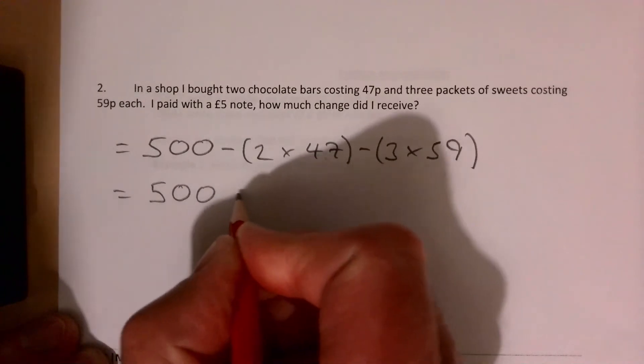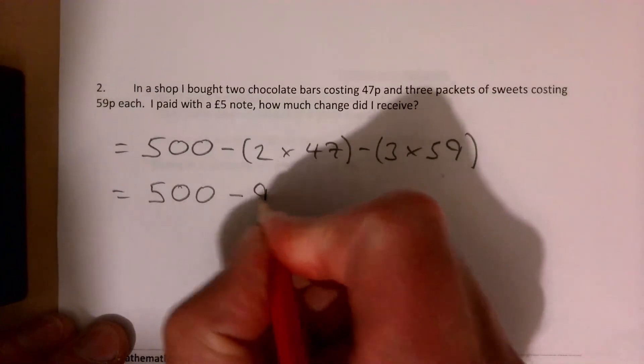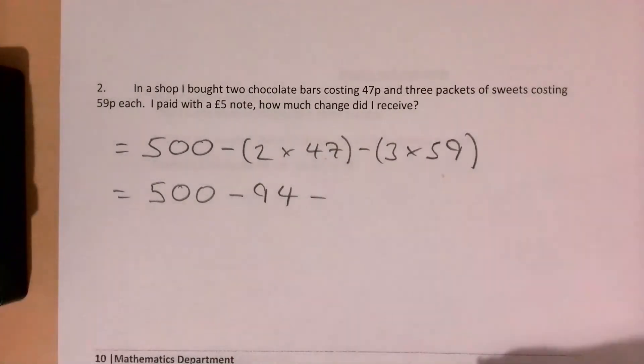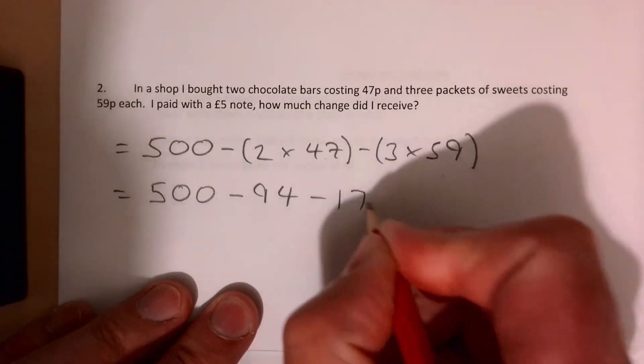So that means 500 take away - 2 times 47 are going to be of course 94. 3 times 59 are going to be of course 177.